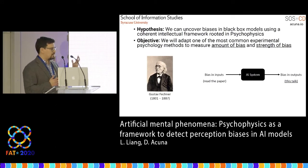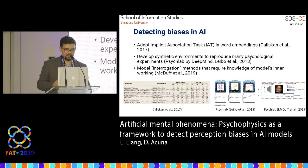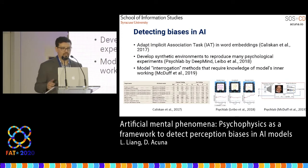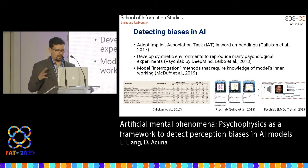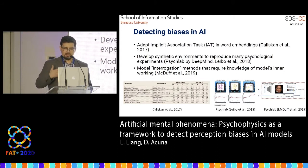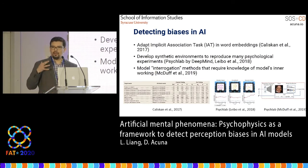We're not the first ones to think about these ideas. You're probably familiar with the work of Caliskan, who proposed adapting the implicit association task — a psychological task introduced around 20 years ago — to measure bias in word embeddings. Others have used virtual environments where artificial agents make decisions like humans, or proposed ways of interrogating AI systems as subjects, but these generally require detailed knowledge of what's happening inside.